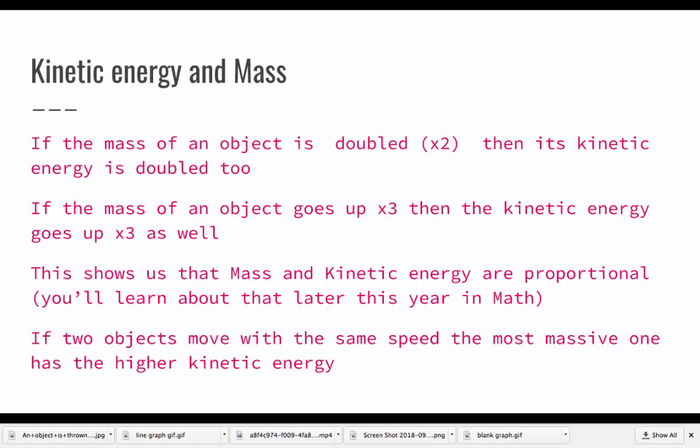So let's look at kinetic energy and mass. If the mass of an object is doubled, that means you're multiplying it by two, then its kinetic energy is doubled too. If the mass of an object goes up times three, then the kinetic energy will go up times three as well.